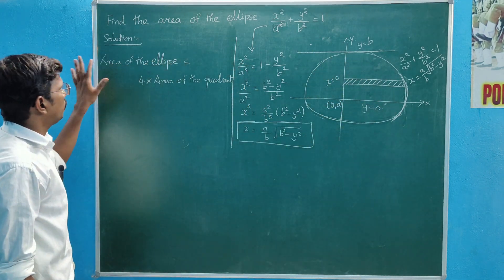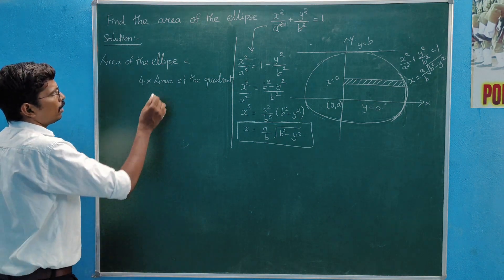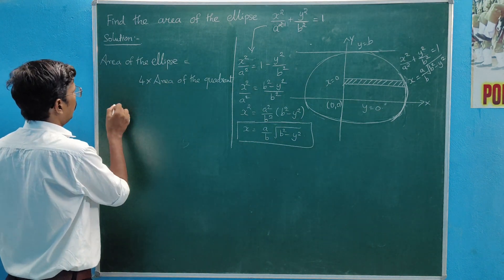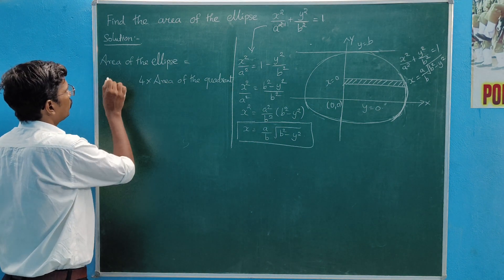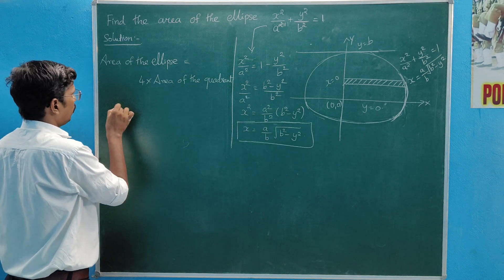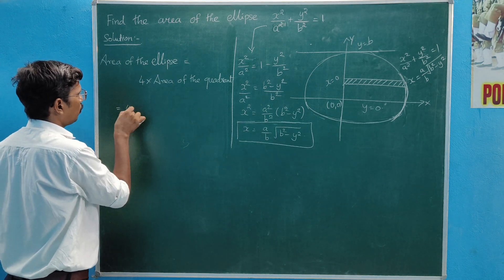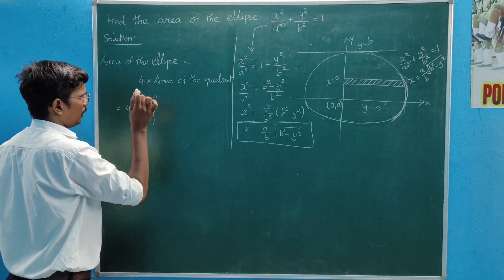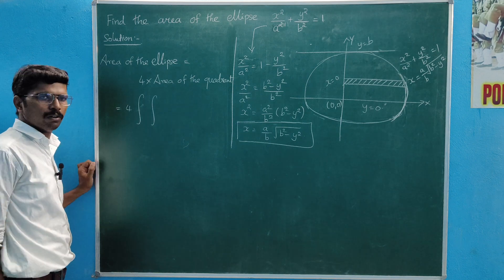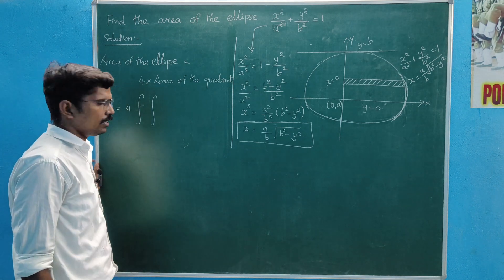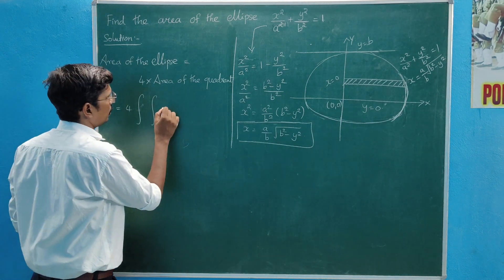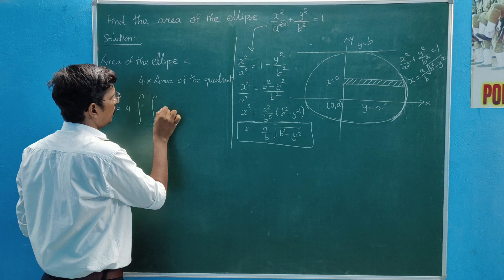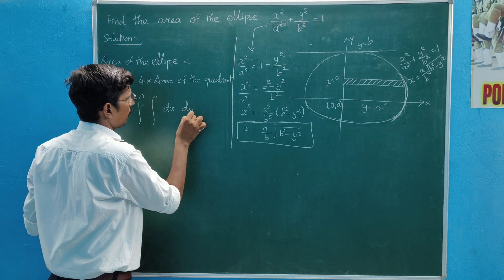So the area of the ellipse means we take 4 times the integral. Area equals 4 times the double integral of dx dy.